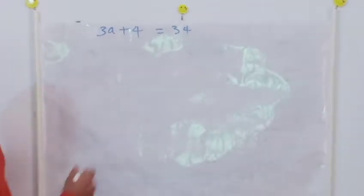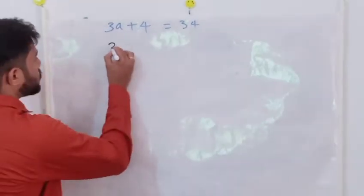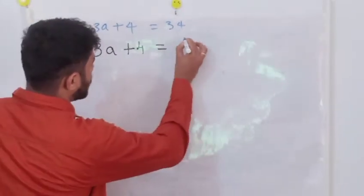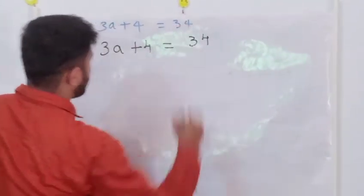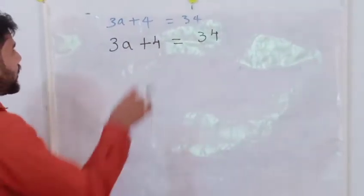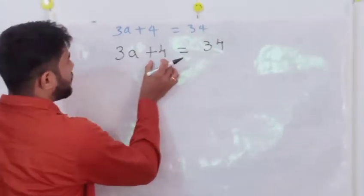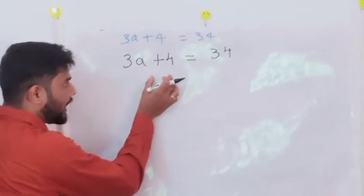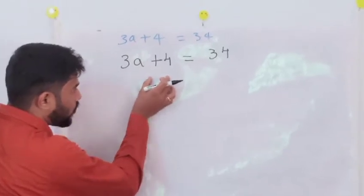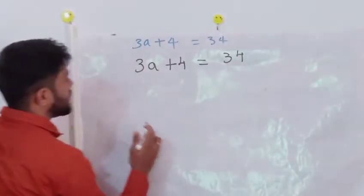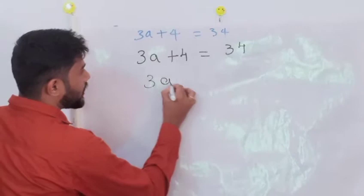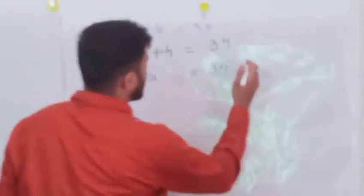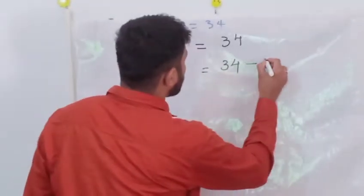I am restating the question again: 3A plus 4, which is equal to 34. Plus 4 is there on the left hand side. I am going to take this plus 4 into the right hand side. Then it becomes 3A, which is equal to 34. Plus 4 going to that side becomes minus 4.